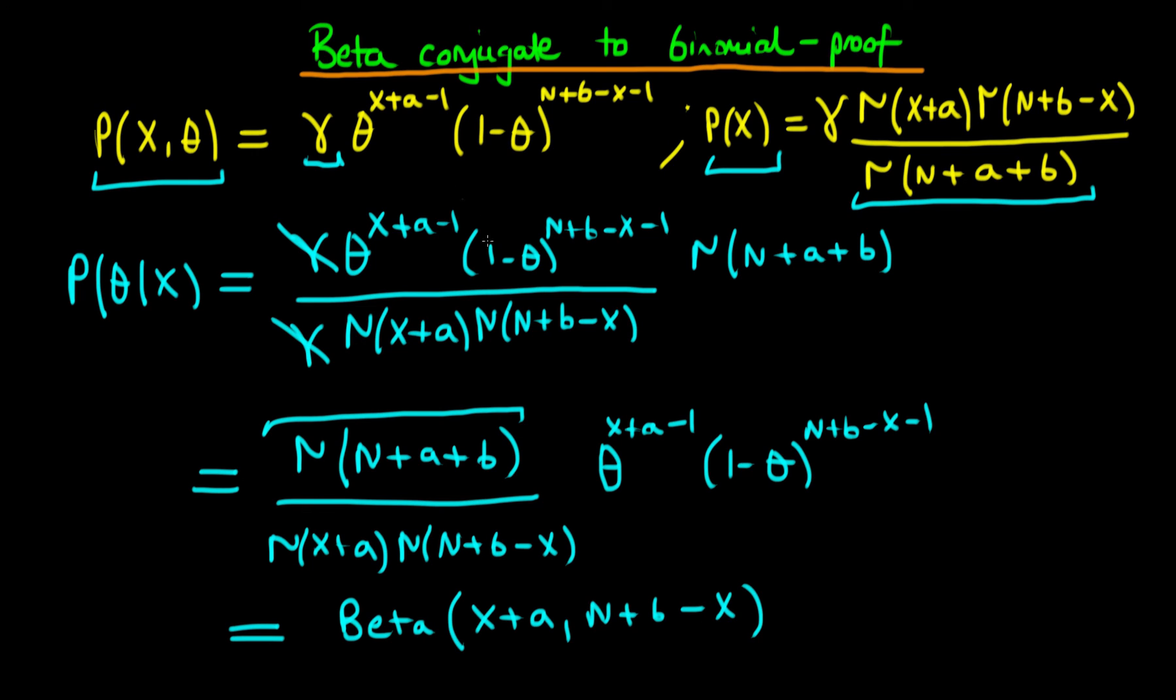Hence, we've proved that the beta distribution is conjugate to a binomial likelihood. And we've got our formula here for calculating the posterior, if we specify a beta prior density and if we're talking about the situation where we have a binomial likelihood function.